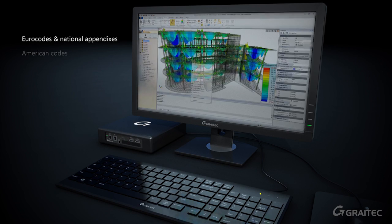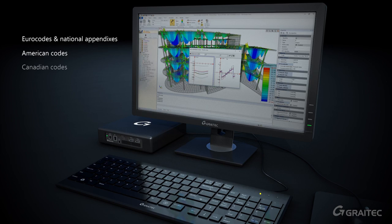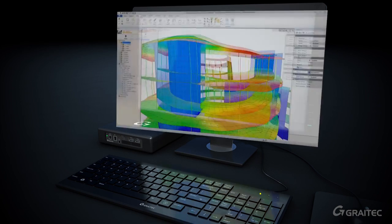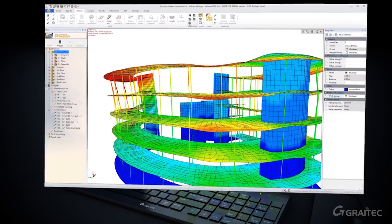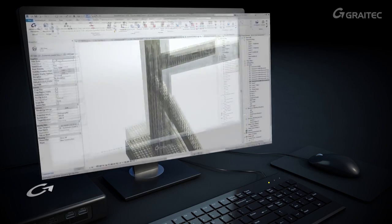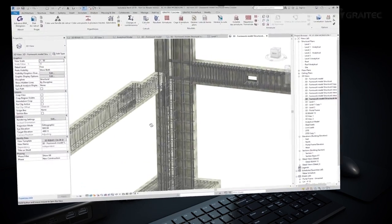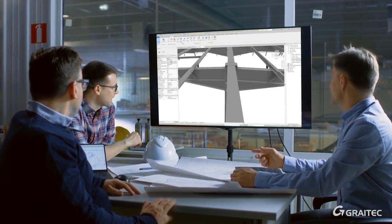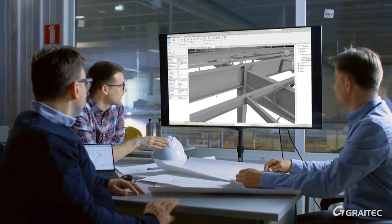We help creating code-compliant and fabrication-ready models. REVIT models are easily analyzed and optimized. REBAR is automatically designed according to code and fabrication constraints. Steel members and connections are checked against all required security constraints.